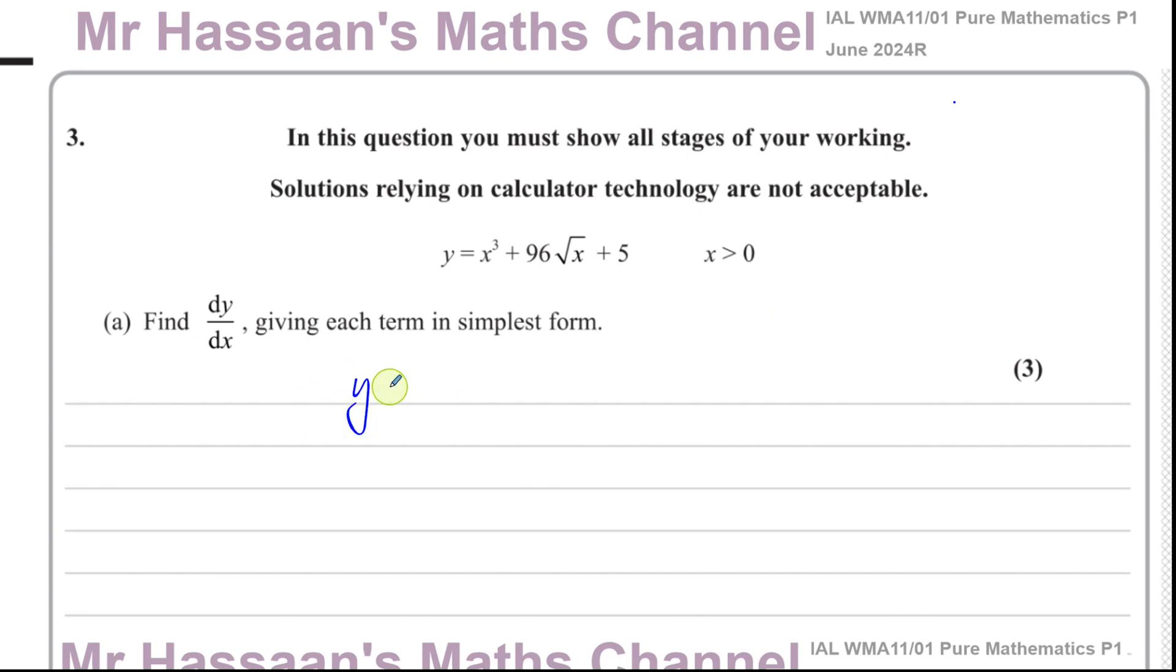So before we start differentiating, we're going to prepare each term so that it is suitable to be differentiated. x cubed is fine. Now anything in surd form should be written in index form. We know that the square root of something is equal to that thing to the power of a half. So this is going to be 96x to the power of a half, and then plus 5.